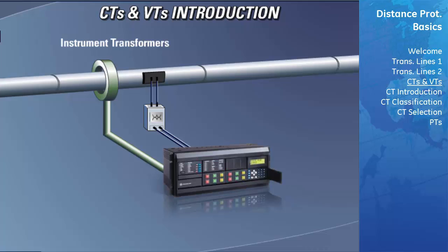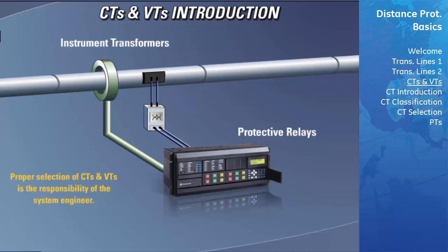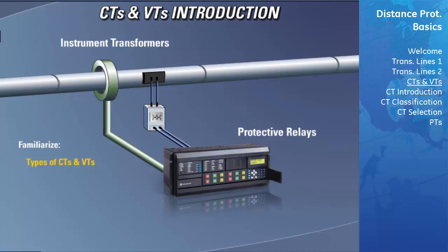Instrument transformers supply protective relays with current and voltage for measurement. This high current and voltage is first converted by the transformers to much lower quantities that can safely be injected into the relay for measurement. It is important to note that the proper selection of current and voltage transformers for protective relaying applications is the responsibility of the system engineer. The purpose of this section is to familiarize, in a general sense, the different types of CTs and VTs, their connection, and accuracy.